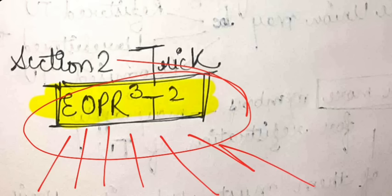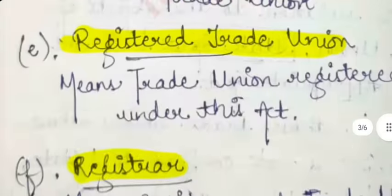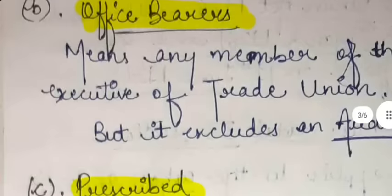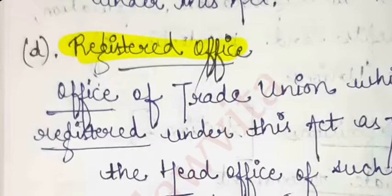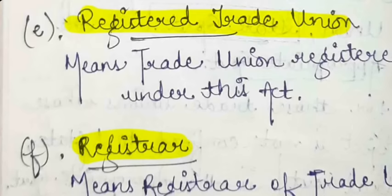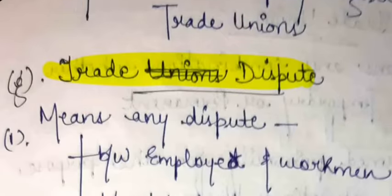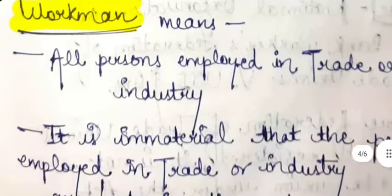A mnemonic to remember the Section 2 definitions is: E-O-P-R³-T². Here E stands for executive, O for office bearer, P for prescribed, R³ for registered office, registered trade union, and registrar (three R-terms), and T² for trade dispute and trade union.